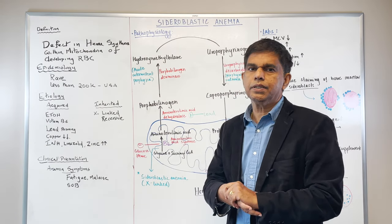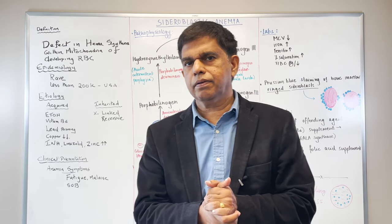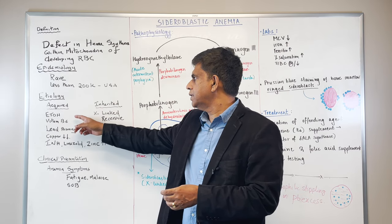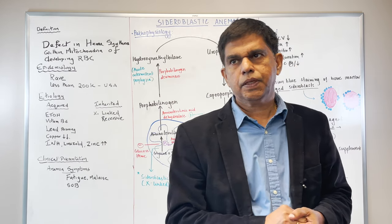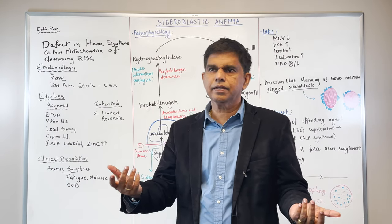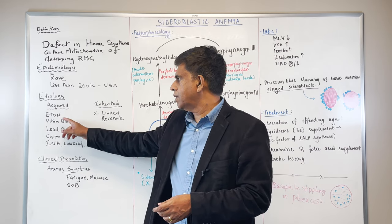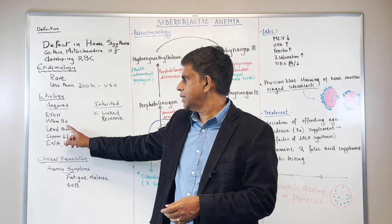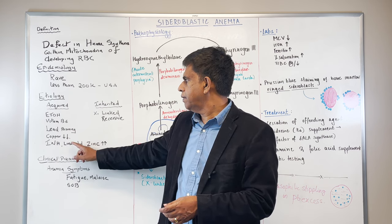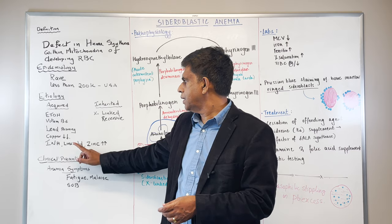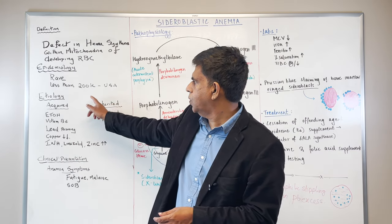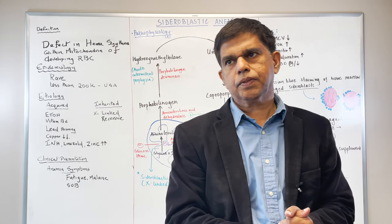Now epidemiology — is it common or rare? Very rare. What are the etiologies? The acquired causes are ethanol abuse, vitamin B6 deficiency, lead poisoning — if you drink one or two drinks that's okay, but alcohol abuse is a problem — decreased copper, isoniazid (INH), linoxylate, and increased zinc. And then there's also a whole different inherited component.